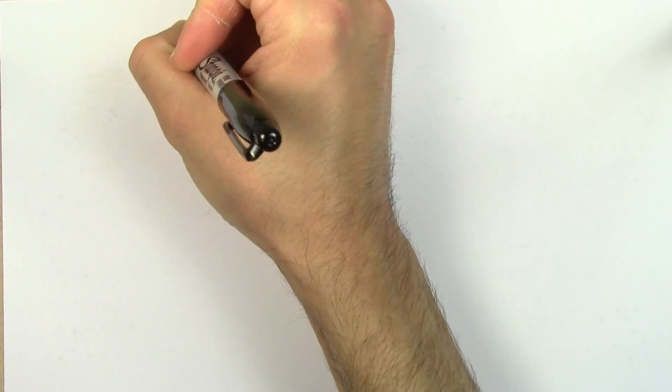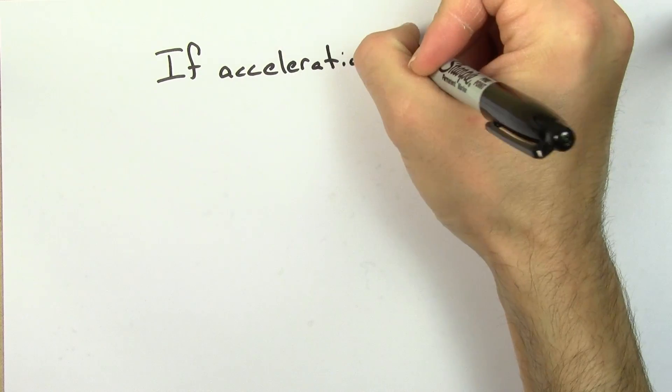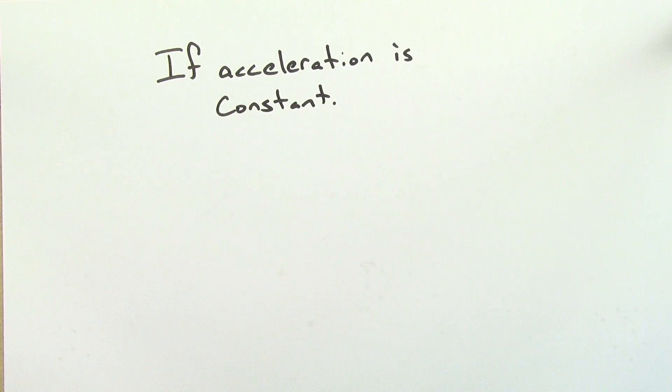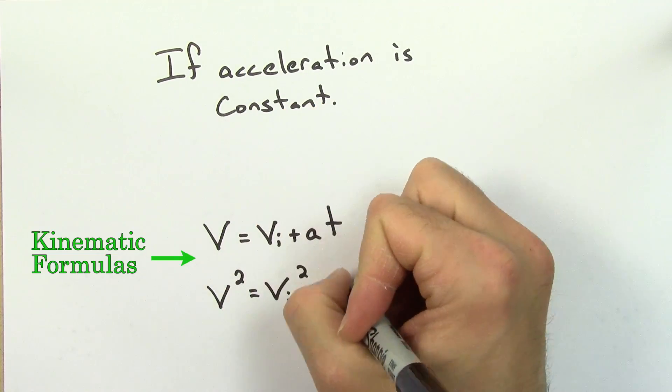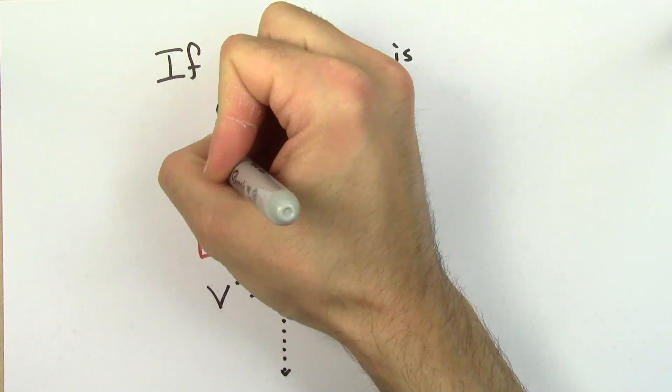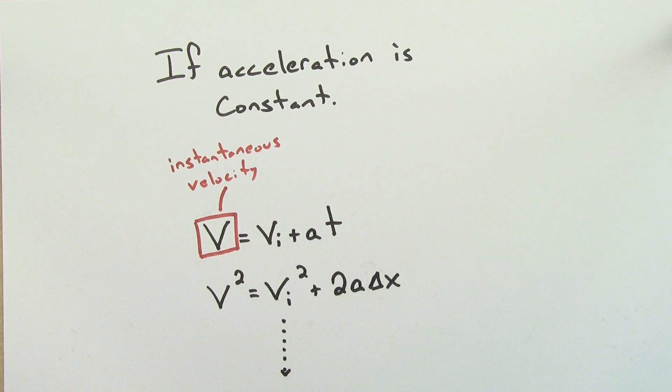A third way to find the instantaneous velocity is for another special case where the acceleration is constant. If the acceleration is constant, you can use the kinematic formulas to find the instantaneous velocity v at any time t.